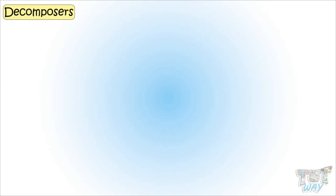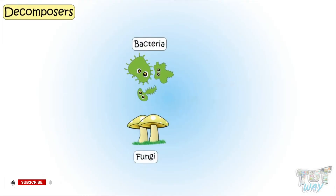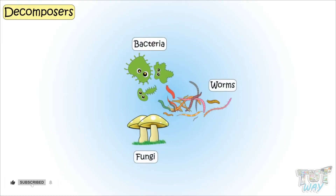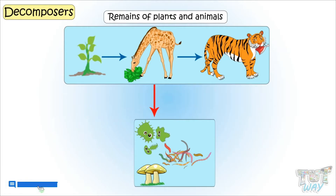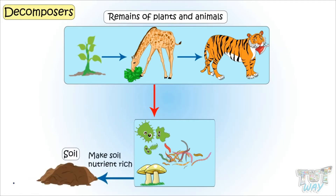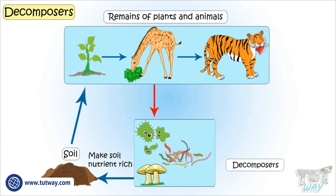What are decomposers? Microorganisms like bacteria, fungi, and even worms eat dead animals and plants. When they eat these dead remains, they convert them into particles that again become part of the soil and make it nutrient rich, which is again used by plants to grow and make food.